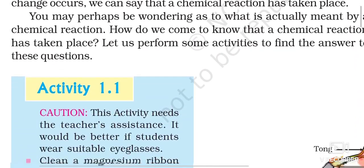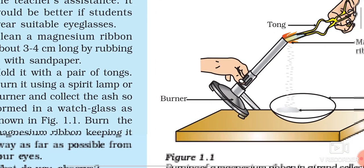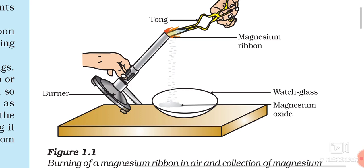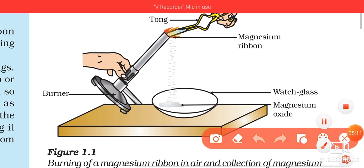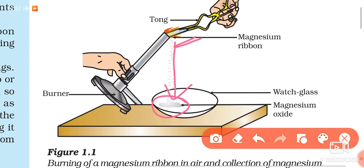Activity number 1.1: Look at figure 1.1. In this activity, we take a magnesium ribbon, rub it with sandpaper to clean it, and try to burn it with a burner. After a few seconds, the magnesium ribbon starts burning, decreasing in size, and getting converted into magnesium oxide — that is, ash — which is collected in a watch glass.